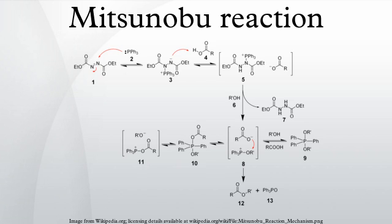The reaction mechanism of the Mitsunabu reaction is fairly complex. The identity of intermediates and the roles they play has been the subject of debate. Initially, the triphenylphosphine makes a nucleophilic attack upon diethyl azodicarboxylate, producing a betaine intermediate 3, which deprotonates the carboxylic acid to form the ion pair 5. DEAD itself deprotonates the alcohol, forming an alkoxide that can form the oxyphosphonium ionate.